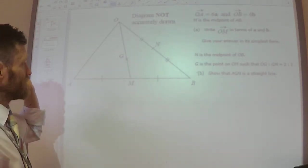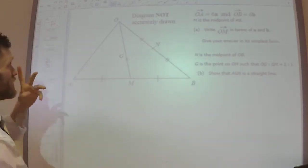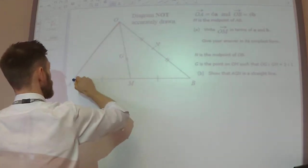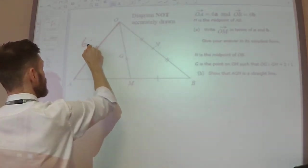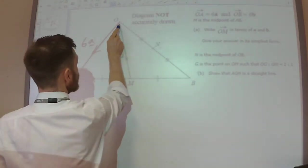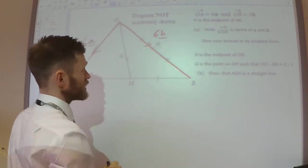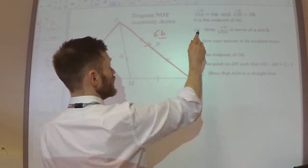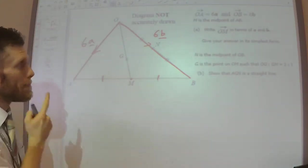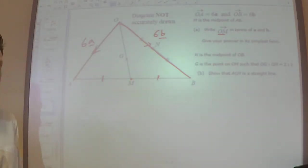We've got two triangles. We're told that the vector O to A is 6a, so this is 6a. We're told that the vector O to B, that whole thing there, is 6b. We're told that M is the midpoint of AB, that's why those lines are there. And we need to write the vector O to M in terms of a and b.